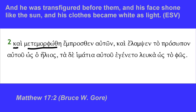We have 'kai,' the connective, and 'metamorphothe.' This is the third person singular aorist passive indicative of 'metamorphoo.' Meta has a variety of meanings — it can mean 'with,' or to cross over a barrier. Meta used with morphoo has to do with form. Morphology, of course, is the scientific study of the forms of things. So the changing of the form is the idea, and it's commonly rendered 'transfiguration.'